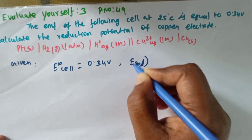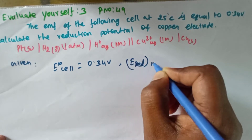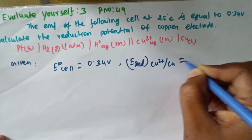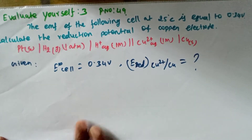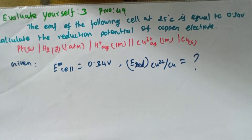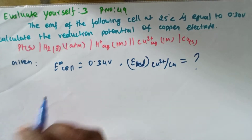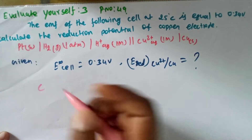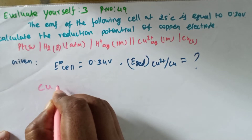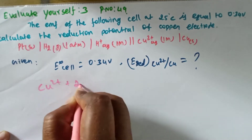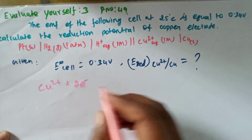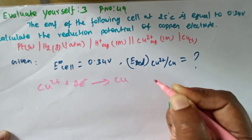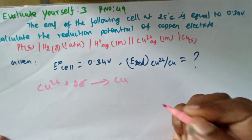Find: reduction potential of Cu²⁺ to Cu. It is equal to what? For the copper reduction, we can write: copper 2 plus accepts 2 electrons and it gives a copper atom.